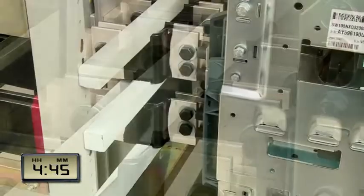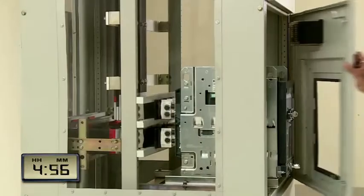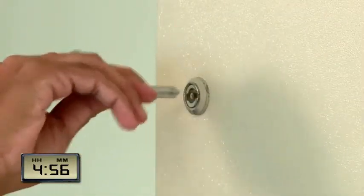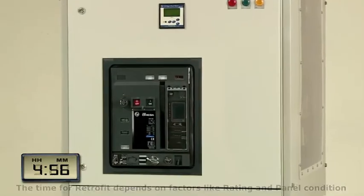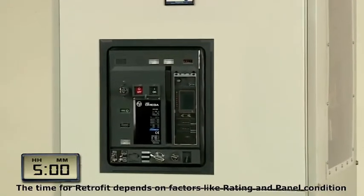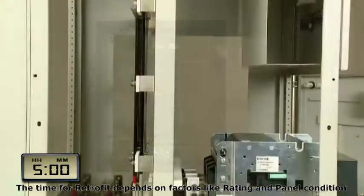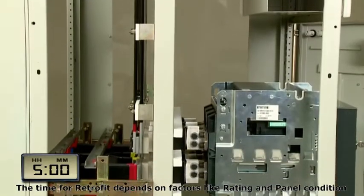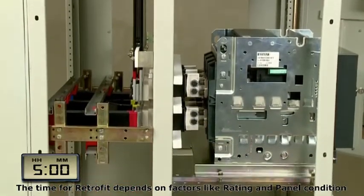The retrofit links are then supported with insulating supports. Finally, the Omega bezel is fixed on the same panel door by making a bigger cutout.